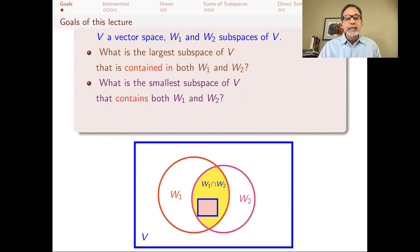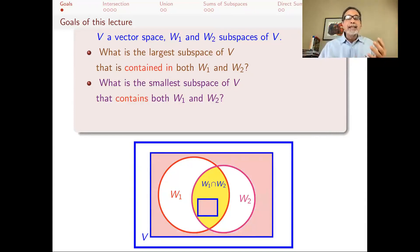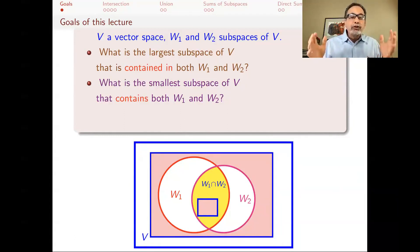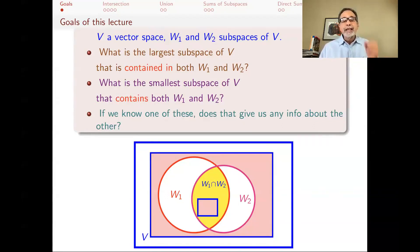The other side of that coin is: what's the smallest subspace of V that contains both W1 and W2? We want something that contains both of them, so we want to go big. We could easily do that by choosing V itself — V is a subspace of itself, another trivial subspace, and it contains both W1 and W2. But we want to be efficient and pick the smallest such subspace. Our final question is whether knowing one of these gives us information about the other — there will be a relationship between the largest subspace inside both and the smallest one containing both.